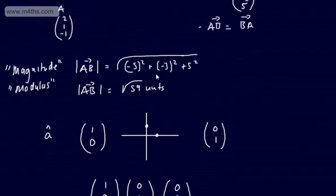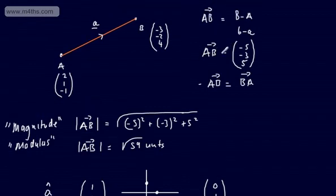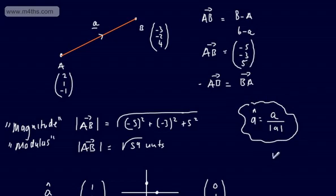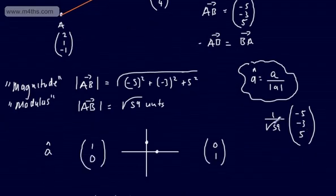We could find a unit vector in the direction of AB — a vector of length 1 that is parallel to this line. A direction vector simply means some multiple of this, and it's going to be parallel. To find a unit vector, a-hat equals A over the modulus of A. So a unit vector in this direction would be (1 over root 59) multiplied by (-5, -3, 5). We're simply dividing through by the modulus.